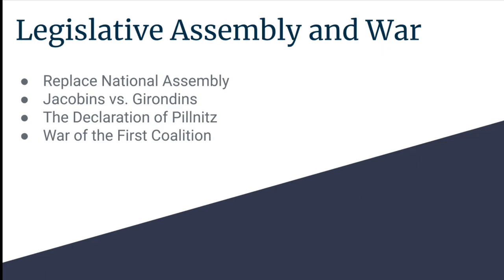Next, we have the Legislative Assembly, which was a new group of legislators that replaced the National Assembly. Basically, members of the National Assembly had agreed that no one in the group would take part in the new government, and the new government reflected the emergence of political factions in the revolution competing for power. Two of these major groups were the Jacobins and the Girondins, which basically were a split branch of the Jacobins who believed in different ideals.